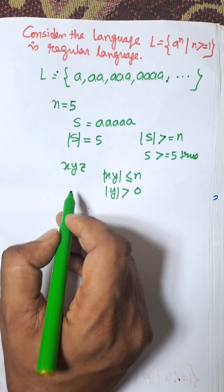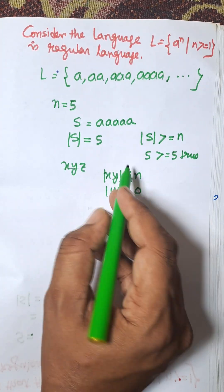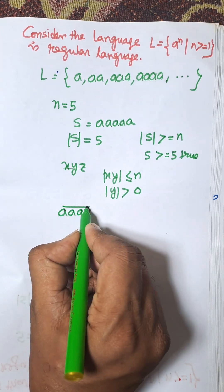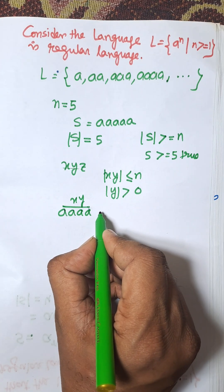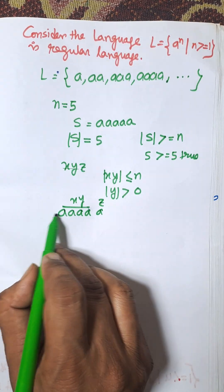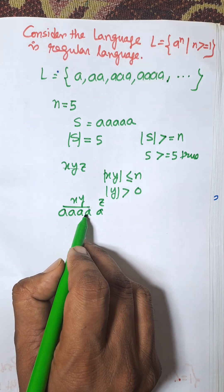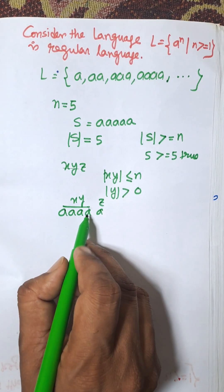Here, considering xy as aaaa and remaining one is z. You can consider any decomposition. Suppose triple a will be xy and remaining a will be z, but here xy is aaaa.